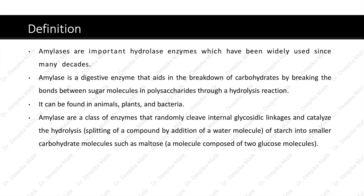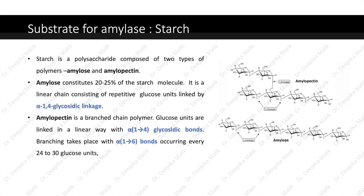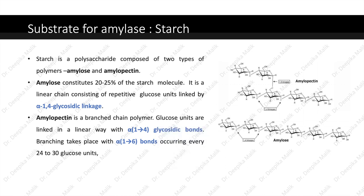It can be found in animals, plants and bacteria. Amylases are a class of enzymes that randomly cleave internal glycosidic linkages and catalyze the hydrolysis of starch into smaller carbohydrate molecules such as maltose, which is composed of two glucose molecules. The main substrate for amylase is starch. Starch is a polysaccharide composed of two types of polymers — amylose and amylopectin. Amylose constitutes 20-25% of the starch molecule.